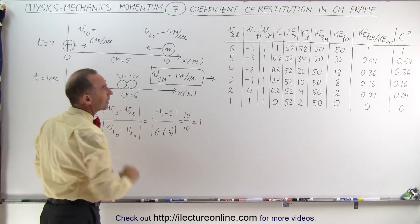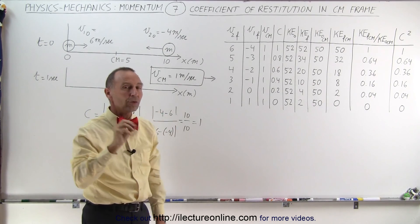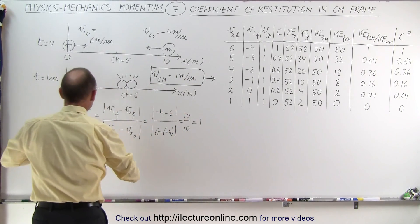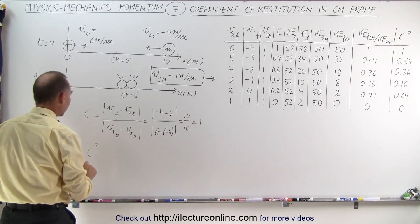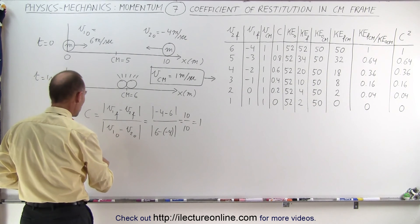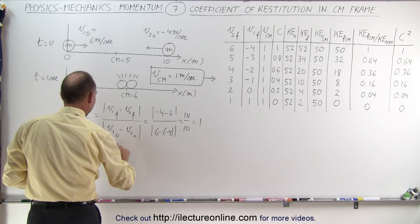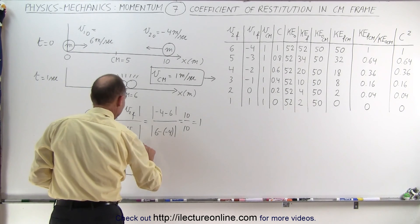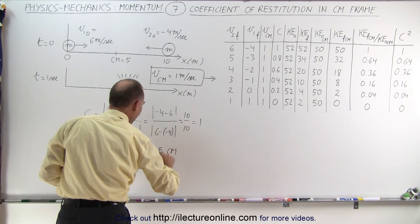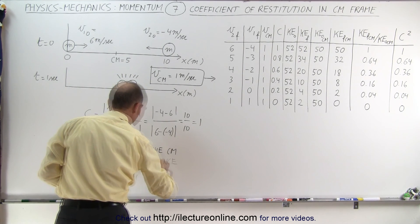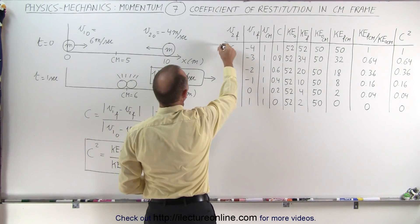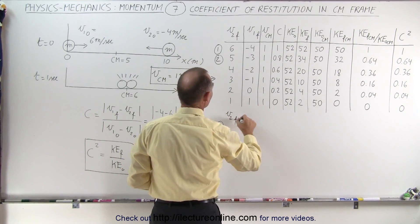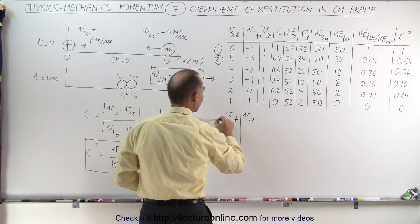Now we're going to calculate the kinetic energy before and after relative to the center of mass, and also calculate C² relative to the center of mass. C² is equal to the ratio of the final kinetic energy divided by the initial kinetic energy — but this is only true in the CM (center of mass) reference frame. In example number one, the final velocities V1 and V2 will be different in this reference frame.